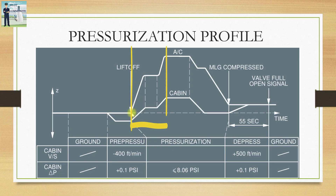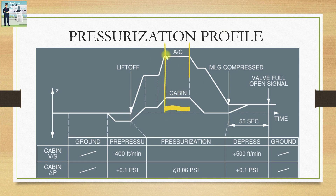After liftoff, the aircraft climbs at a much higher rate of climb compared to the cabin. This is achieved by closing the outflow valves at a certain rate to ensure a comfortable experience. The pressurization happens according to a pre-programmed law that takes into account the aircraft's actual rate of climb and cruising altitude. Whatever the cruising altitude, the cabin altitude will be much less and maintained according to a delta pressure of less than or equal to 8.06 psi — which is actually the structural limitation of the aircraft fuselage.